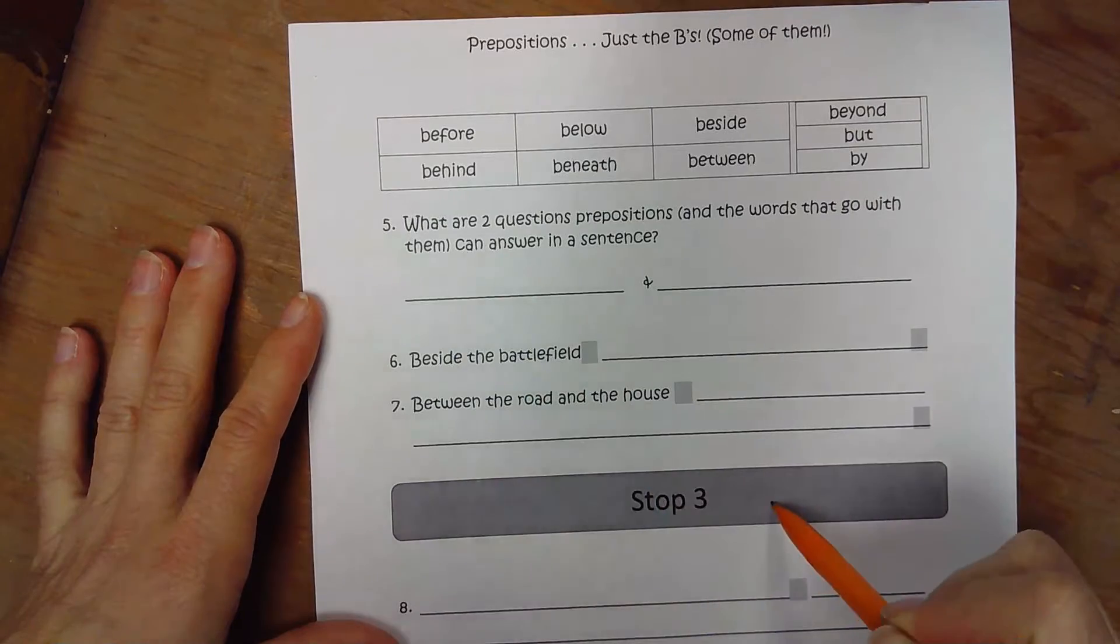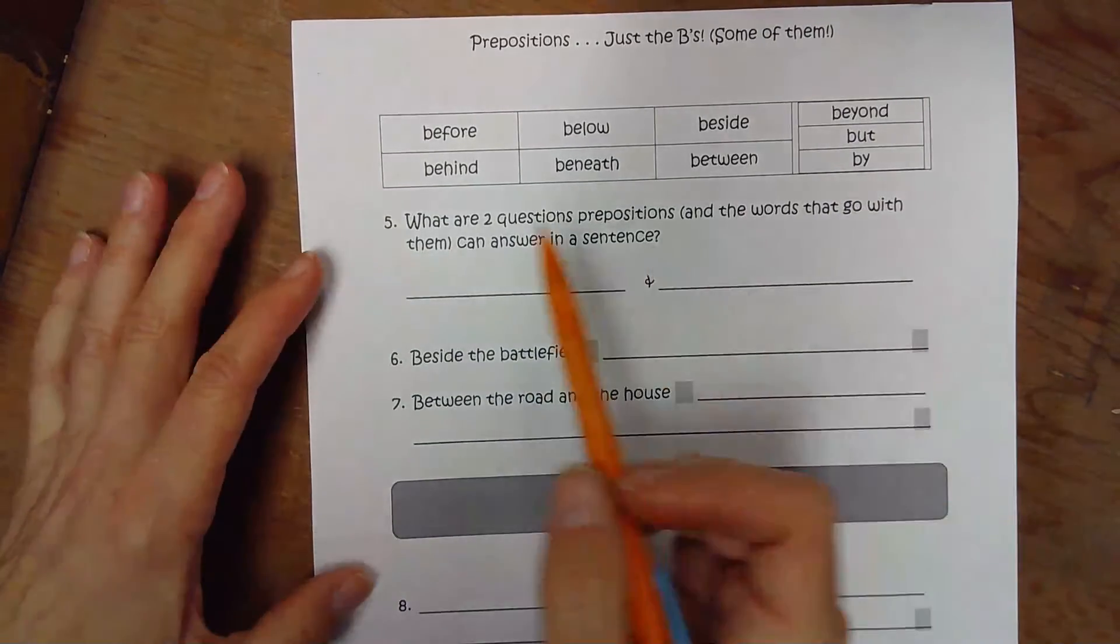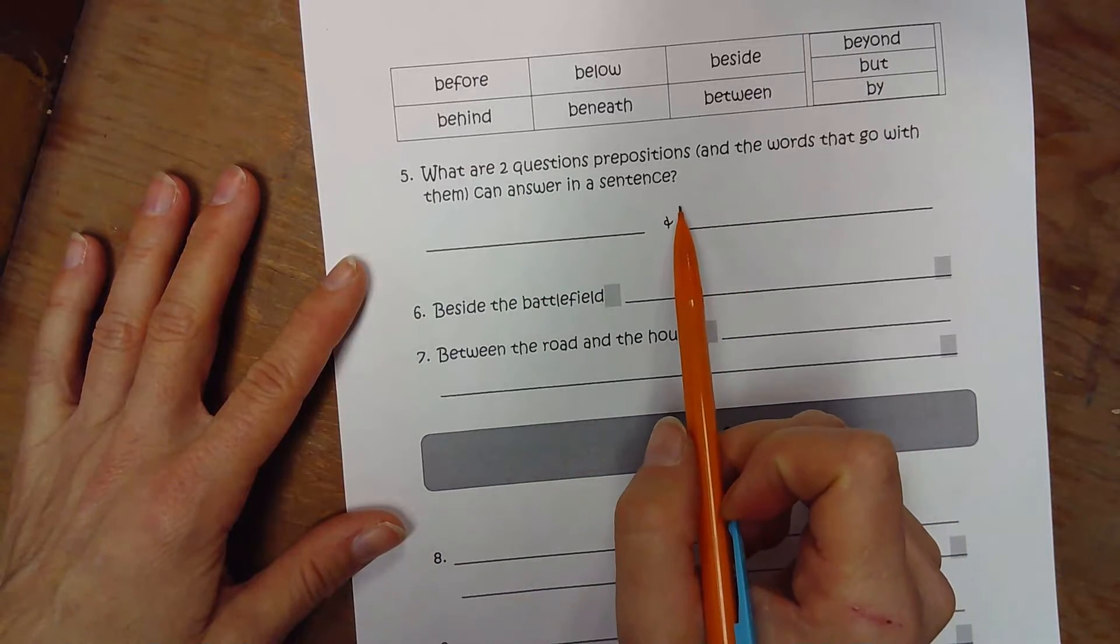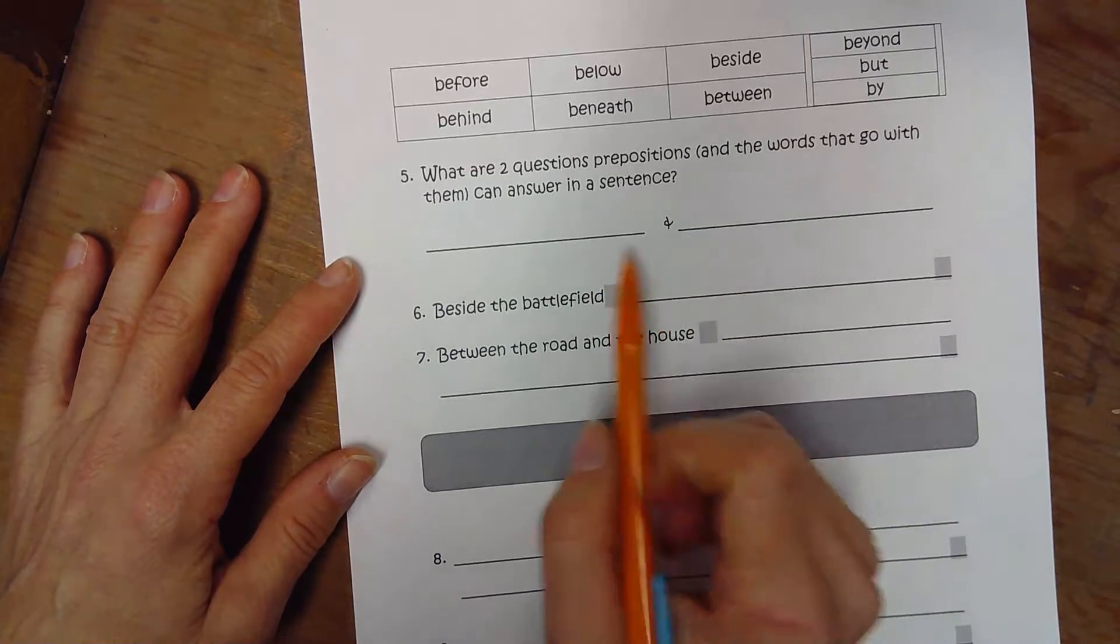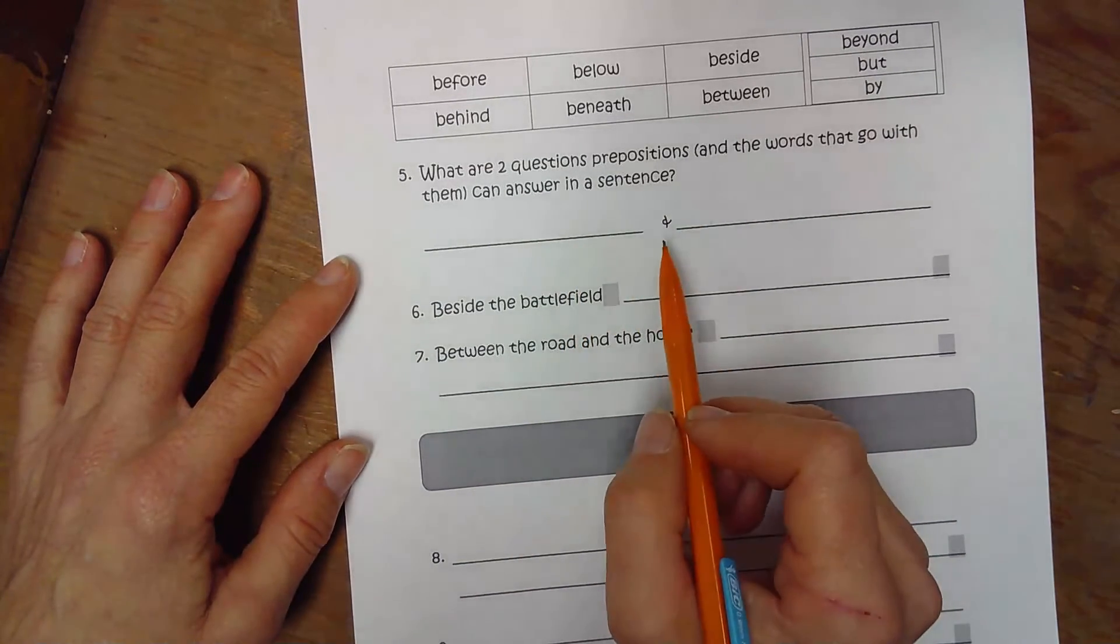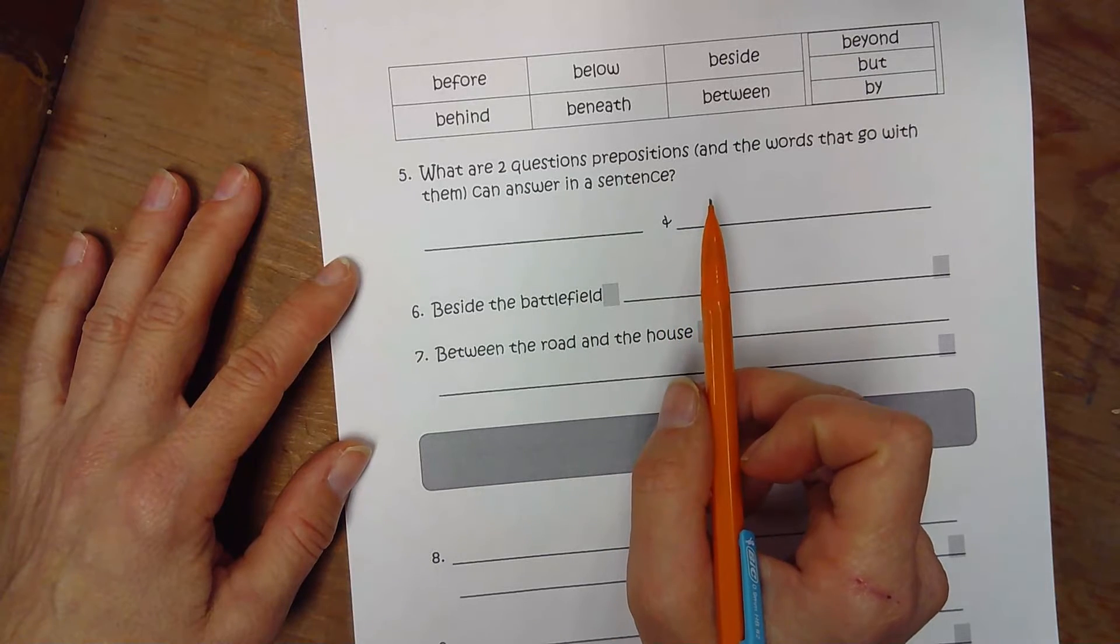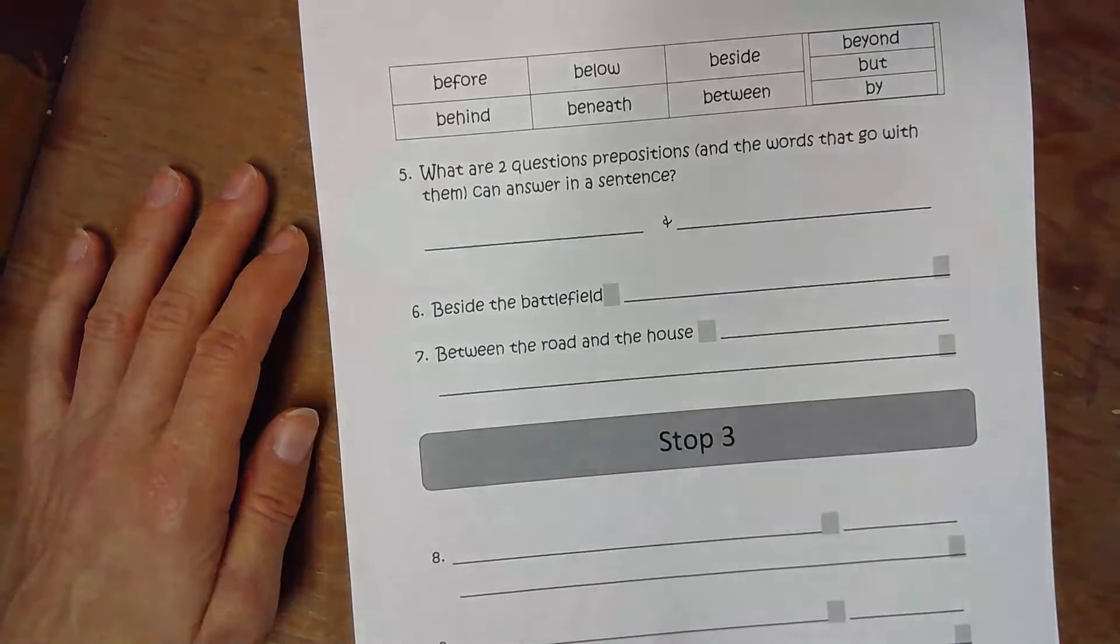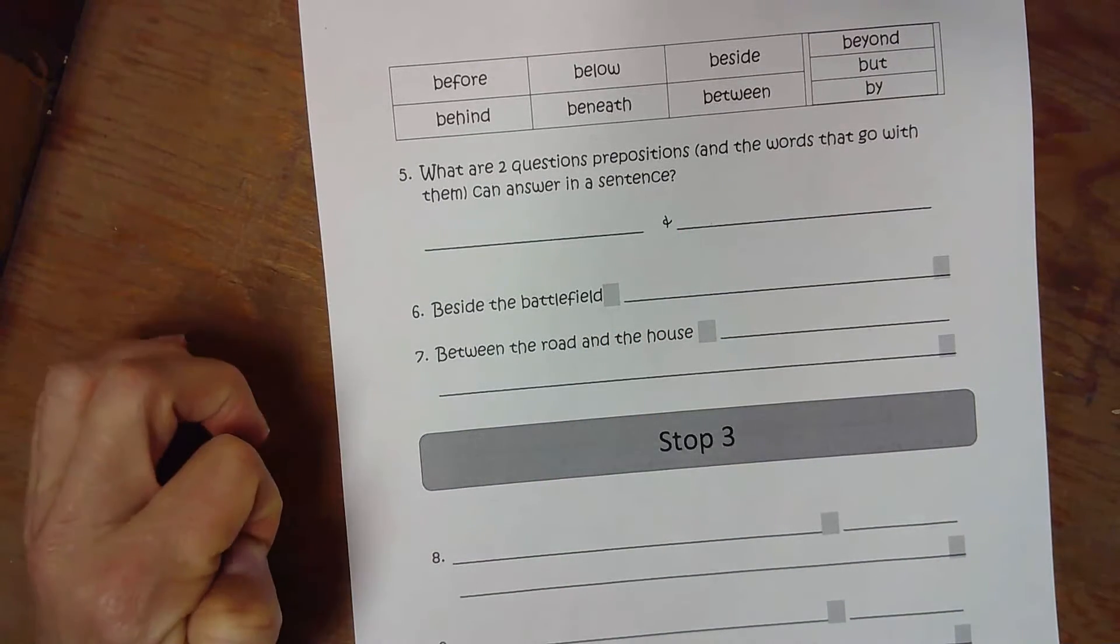...doing this section before you get to stop section three. Two questions that prepositions and the words that go with them can answer in a sentence. These could be the same two questions you put at the beginning if you got them correct, or you could look back in the folder and pick two other questions that prepositions answer.